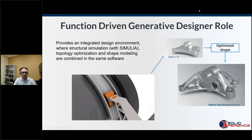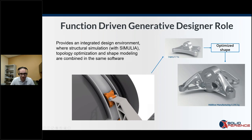The function-driven generative designer role provides an integrated work environment using structural simulation with the Tosca solver within Simulia. It gives topology-optimized shapes all within the same software — we can design, optimize, and re-optimize. In the example we'll do, we're going to optimize a part that currently has a weight of 700 grams. The new optimized shape using the Tosca solver will have a weight of 295 grams while still maintaining the same stiffness and overall performance, essentially removing non-essential material.